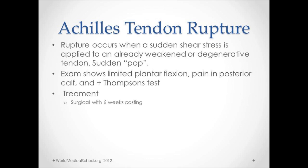An Achilles tendon rupture is typically heard with a sudden pop due to shear stress applied when the tendon is already weakened or degenerated. Exam shows limited plantar flexion and pain in the posterior calf with a positive Thompson test. The Thompson test is performed by putting the patient in a prone position and squeezing the calf muscles. Absence of foot plantar flexion indicates an Achilles tendon rupture.